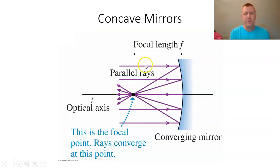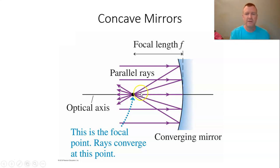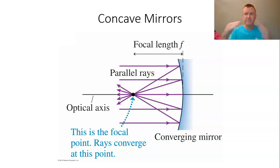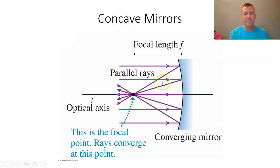With concave mirrors, light coming in parallel reflects off the surface — each ray obeys the law of reflection. The one coming in directly reflects directly back. The one coming in at an angle reflects according to angle of incidence equals angle of reflection. All these light rays reflect through a single point — we call this converging. They all converge to a single point called the focal point. So another name for a concave mirror is a converging mirror.